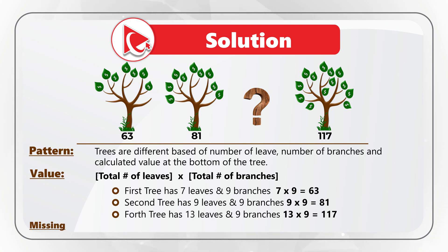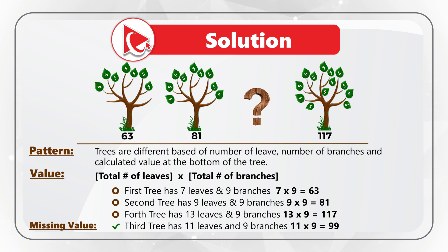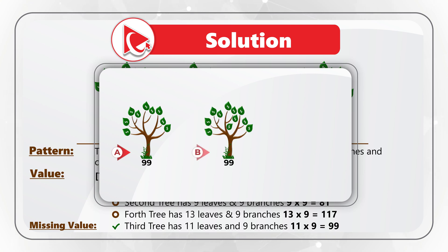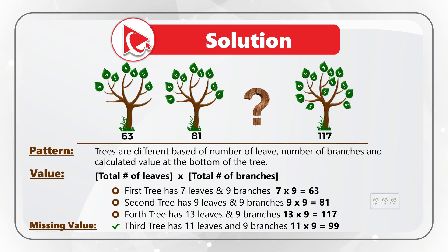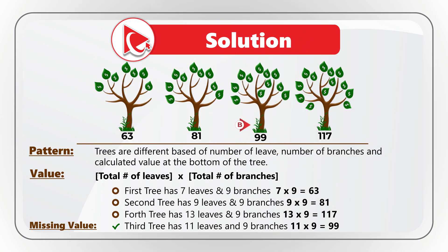To calculate the missing value on the third tree, you multiply 11 leaves by 9 branches: 11 × 9 = 99. Choices A, B, and C all have a value of 99 at the bottom, but the correct choice is only choice B, because only choice B has 11 leaves and 9 branches. Multiplying 11 × 9 equals 99, which matches the formula.